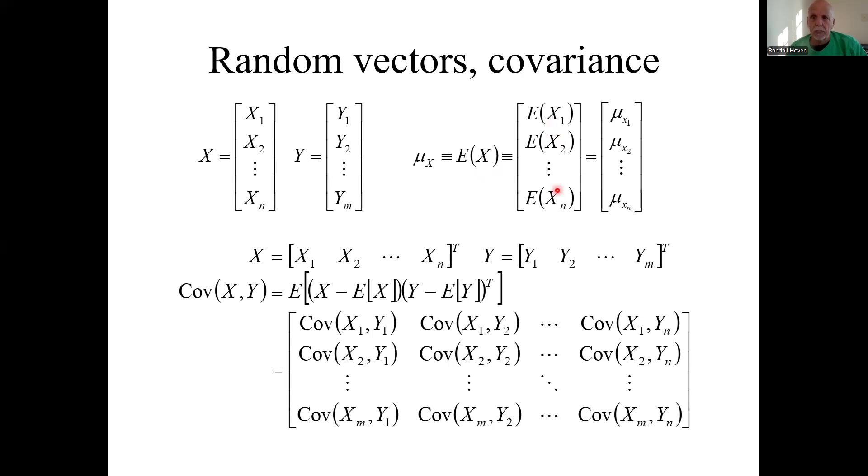Vector values of the individual random variables. This is just more notation. Since the standard is a column vector, we could write it horizontally and then say it's that transpose.